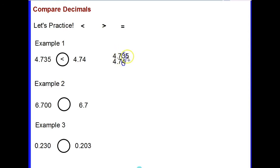Even though the top decimal had more digits, it was still the smaller decimal. You must compare using place value by lining them up — you can't just look at the number of digits and assume that's going to be the larger decimal.